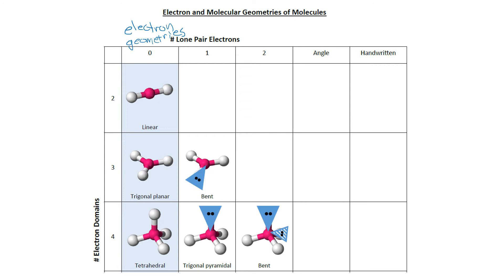The names that are listed in each of the squares are referred to as the molecular geometry. For instance, trigonal pyramidal, that's our molecular geometry.